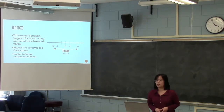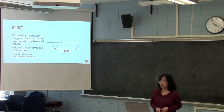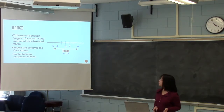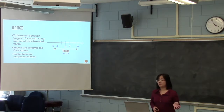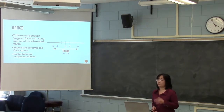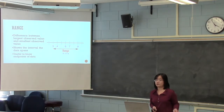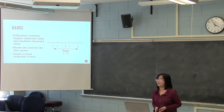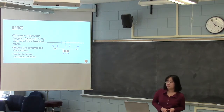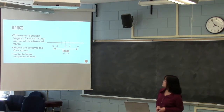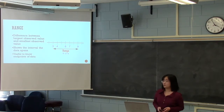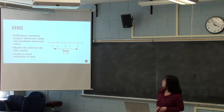The third measure of spread is the range, which is the difference between your largest and smallest observed values. For example, if the largest value in your data set is 9 and the smallest is 3, then 9 minus 3 equals 6 — so your range is 6. This shows the interval that your data spans, and you calculate it using the endpoints of your data.